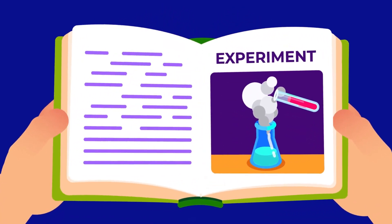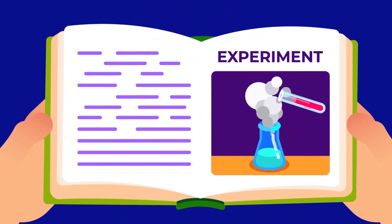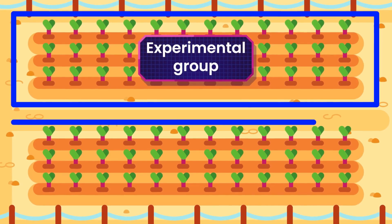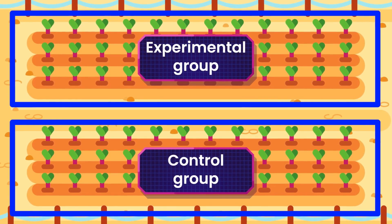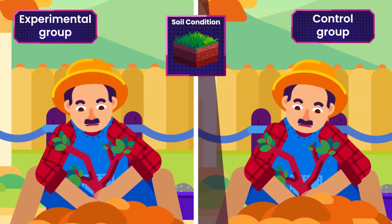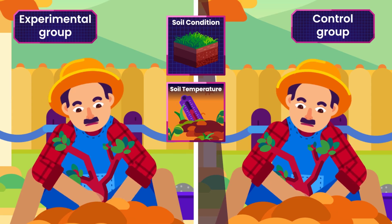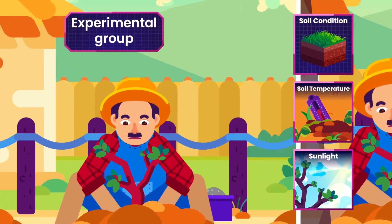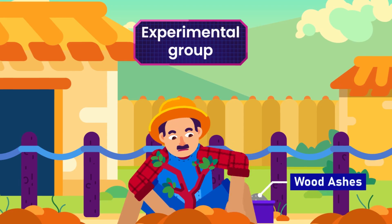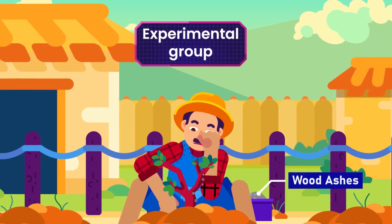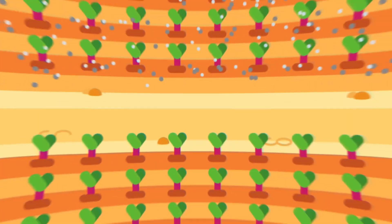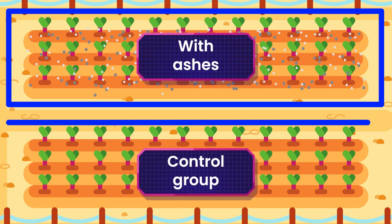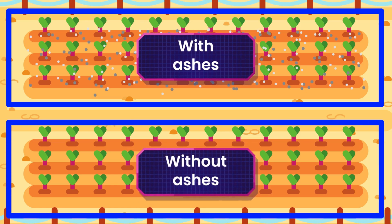To test the hypothesis, let's design an experiment where you can manipulate variables or factors. Start by creating an experimental group and a control group. Keep all factors — such as soil condition, soil temperature, and sunlight — the same, except for one factor that you're testing. Let's start by spreading wood ashes as a repellent on top of the garden bed's topsoil. The experimental group then consists of areas covered with the ashes.